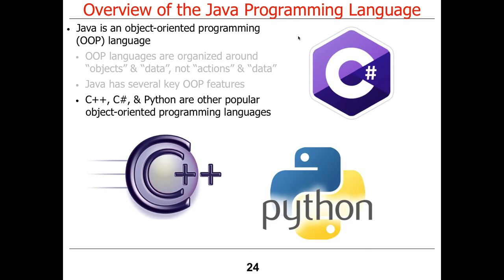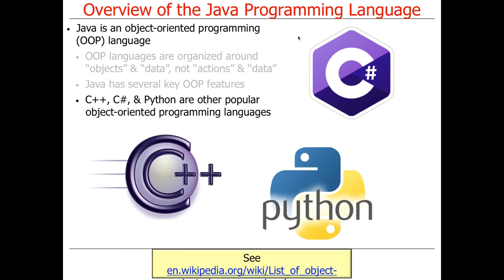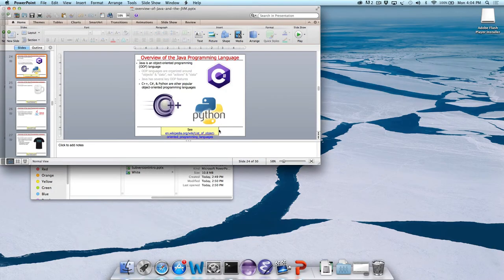Java is by no means the only object-oriented language. There's also C++, the granddaddy in the current genre of OO languages, though there are many that predate it like Smalltalk and Simula. There are also newer languages very much like Java, like C#, which goes back and forth with Java kind of stealing each other's features. And then Python, which is another popular language for object-oriented programming.